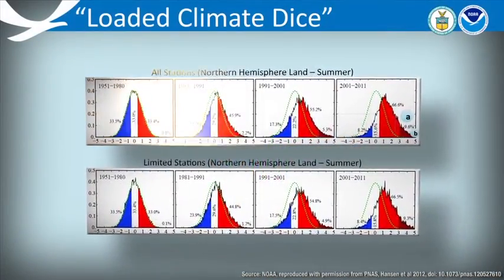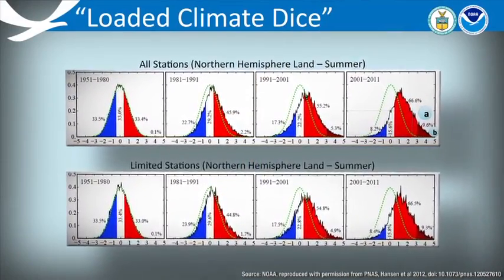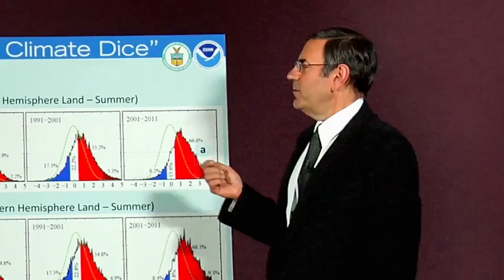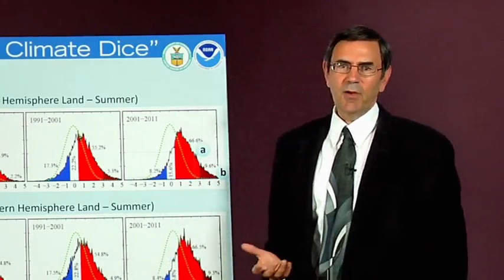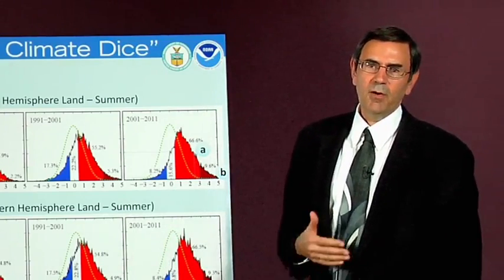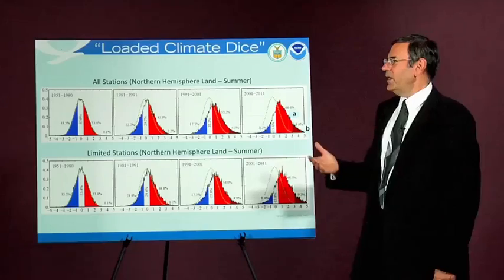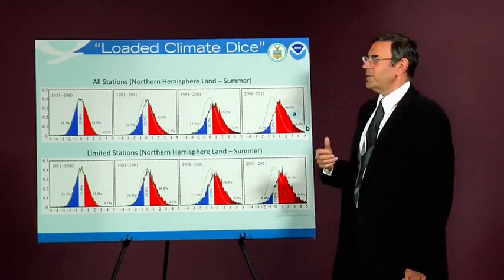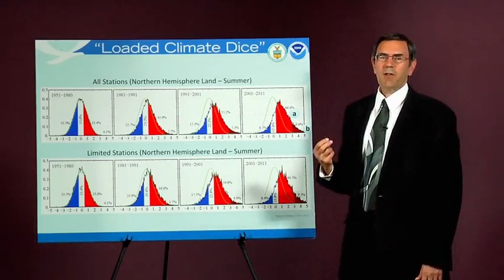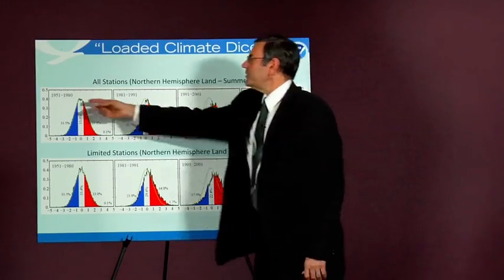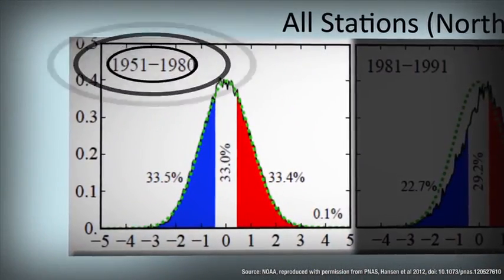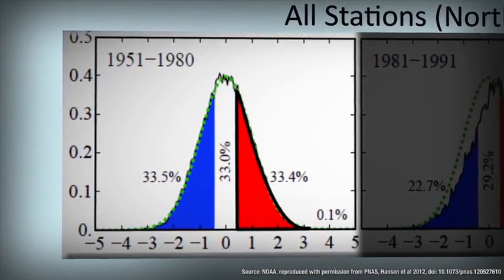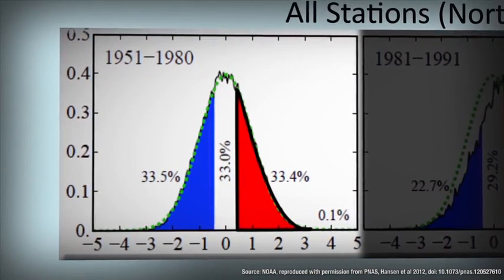Next, we want to talk about near-surface monthly temperatures across all the land masses during the summer in the northern hemisphere. Most of you are familiar with the normal distribution — we all got graded on the curve at one time or another. Monthly temperatures across the northern hemisphere can follow a normal distribution quite closely. If we look at the temperatures from the 30-year period 1951 to 1980, we see about a third of the data falling into what we would call the above-normal category.